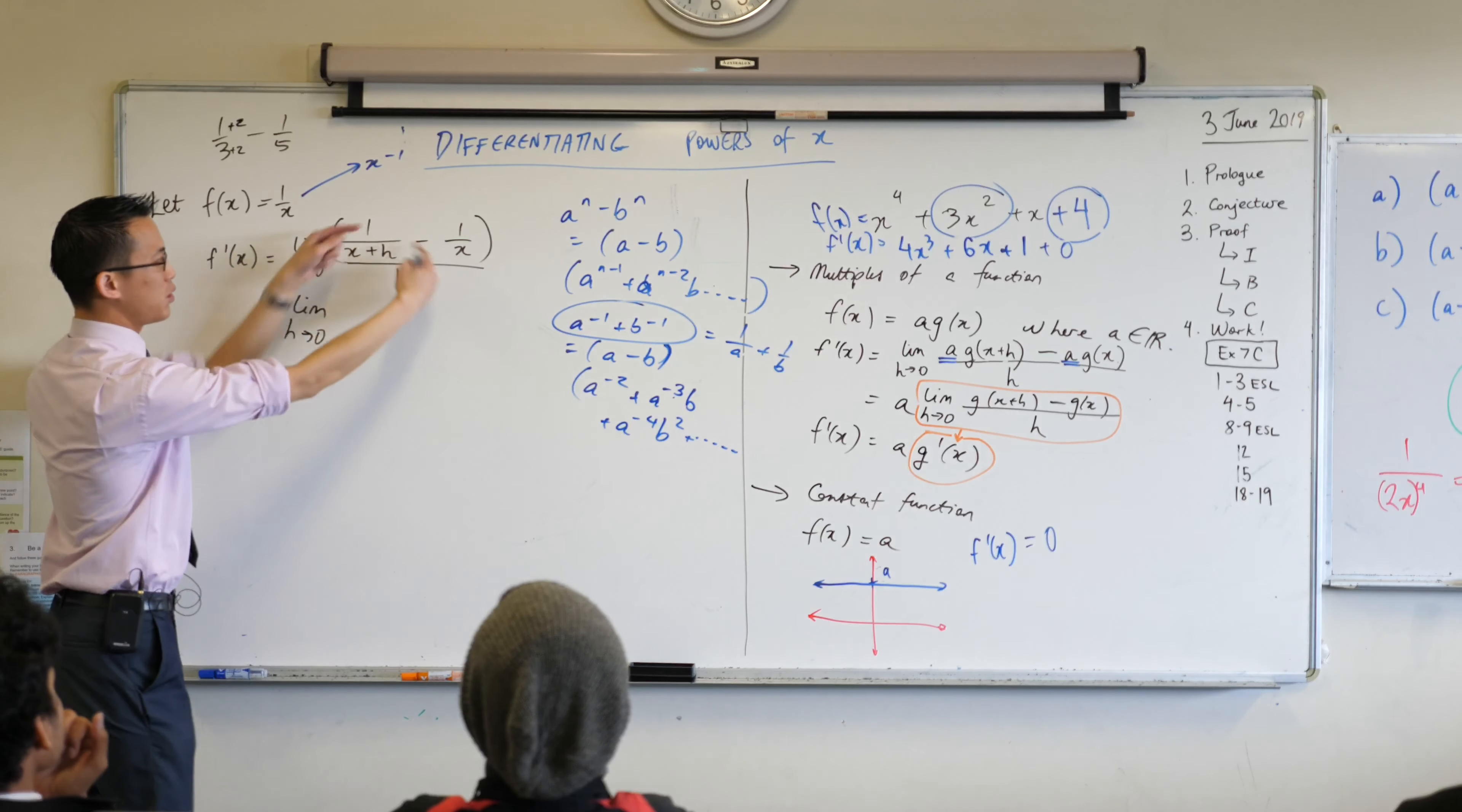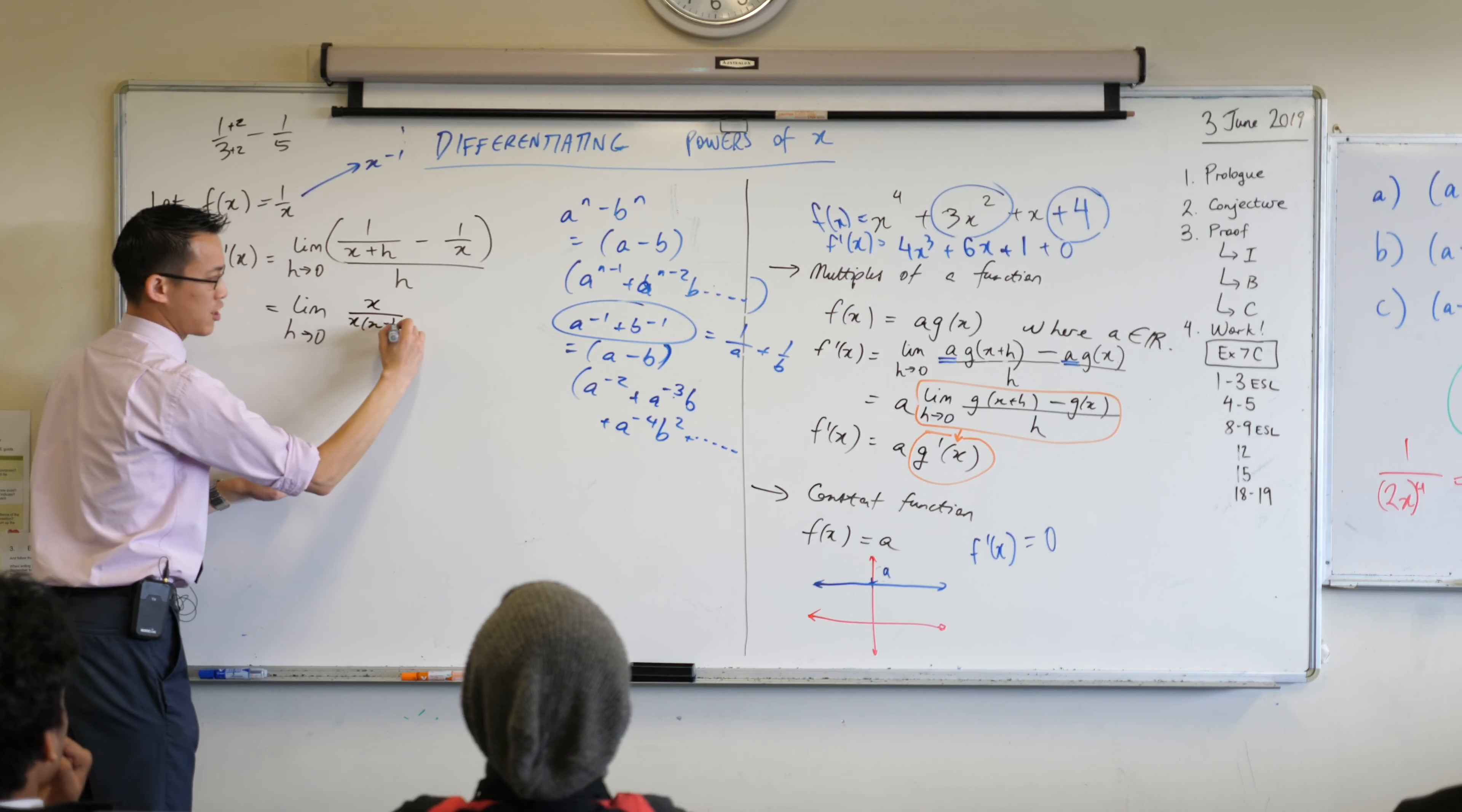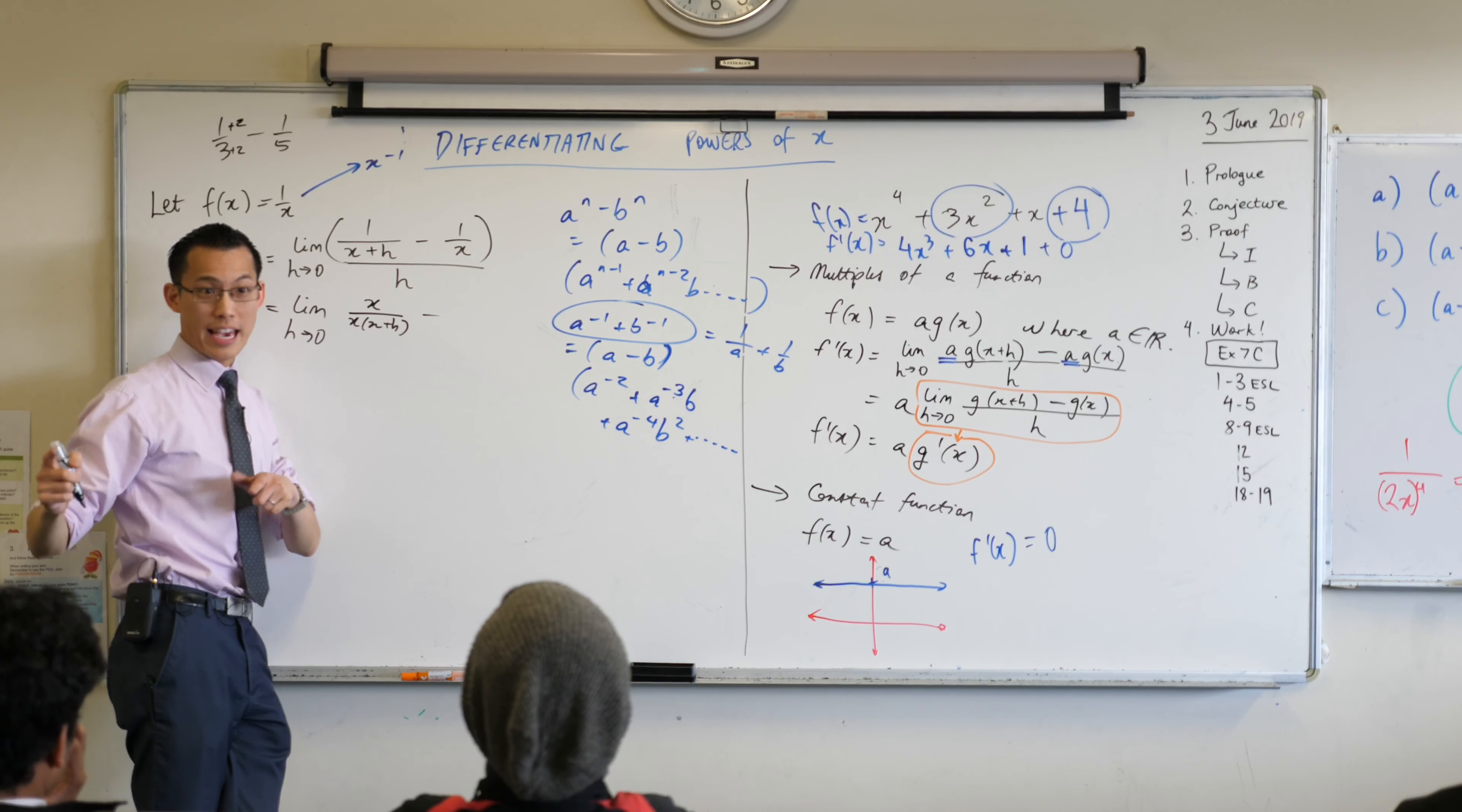So instead of adding stuff to denote numerators and denominators I've got to multiply. So I will do something like cross multiplication here. I'm gonna multiply this fraction by x over x so that leaves me with x over x(x plus h). I'm gonna leave that factorized, you'll see why in a second.